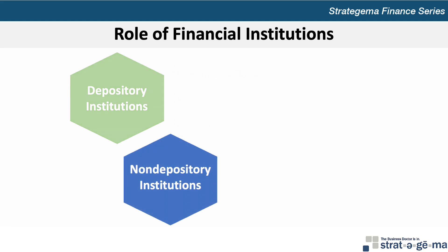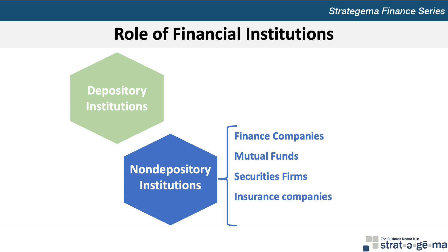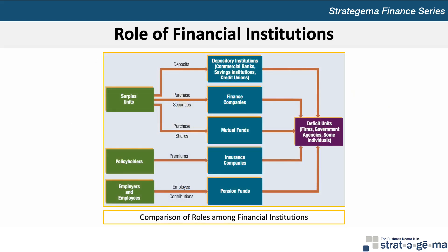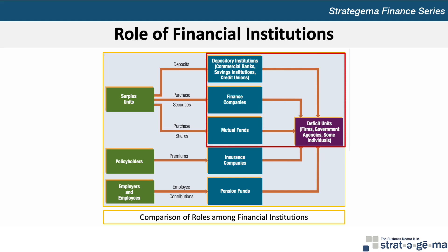Non-depository institutions generate funds from sources other than deposits, but also play a major role in financial intermediation. Non-depository institutions include finance companies, mutual funds, securities firms, insurance companies, and pension funds. The role of financial institutions in facilitating the flow of funds from individual surplus units or investors to deficit units or borrowers is illustrated in this diagram, where surplus units make deposits into depository institutions, purchase securities in finance companies, and purchase shares in mutual funds, all of which make their way to deficit units such as companies, government agencies, and some individuals.